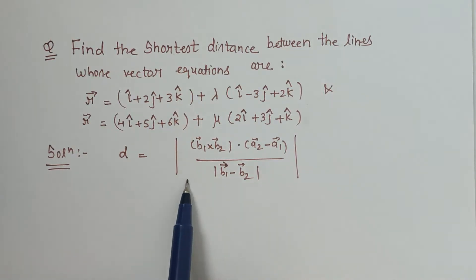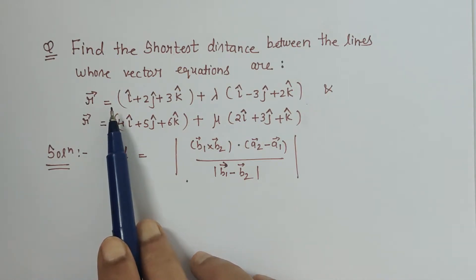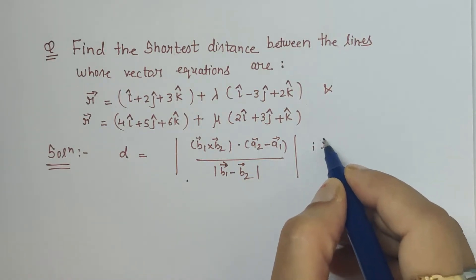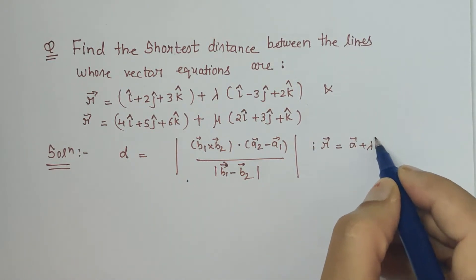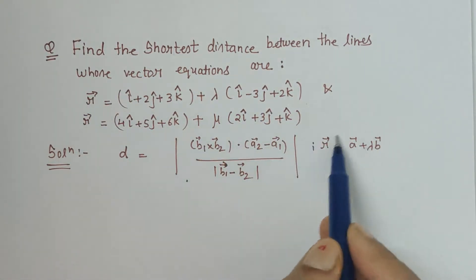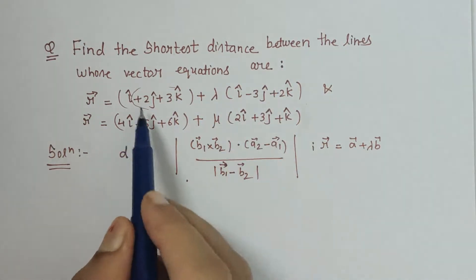So here the standard form of equation of line in vector form is given by r vector equals a vector plus lambda b vector. When we compare this equation with the standard form, this is my a1, this is my b1, this is my a2, this is my b2.